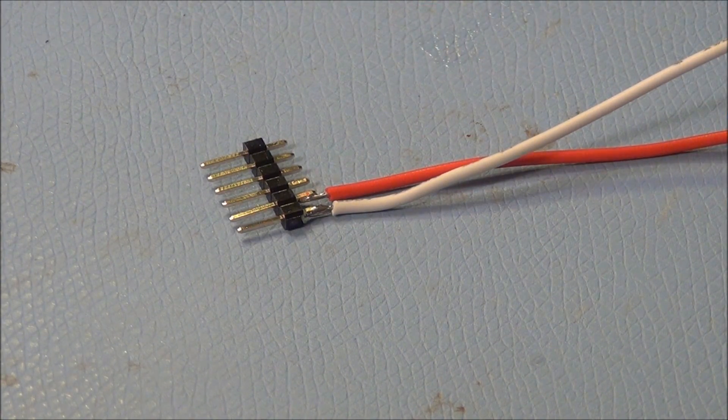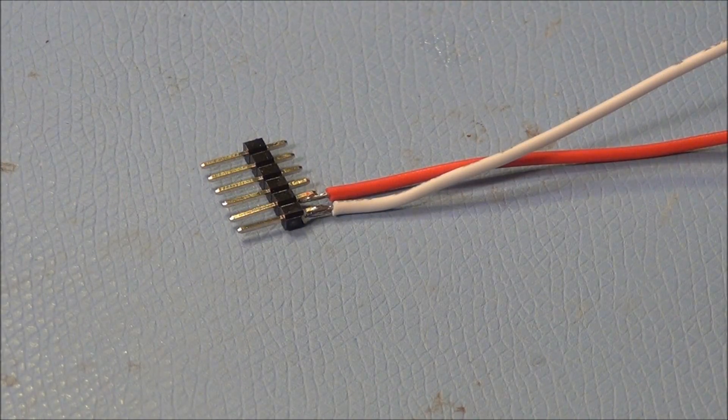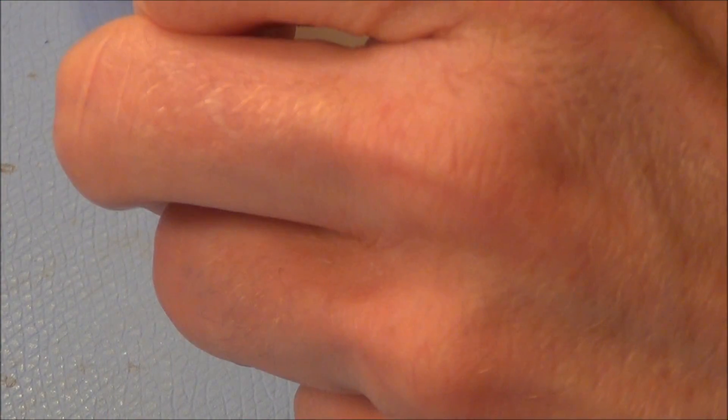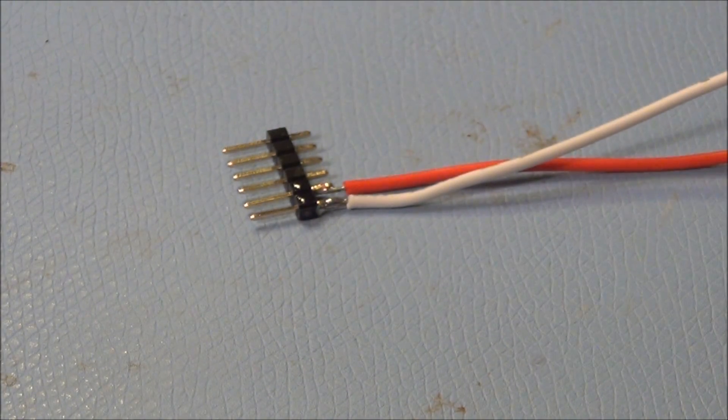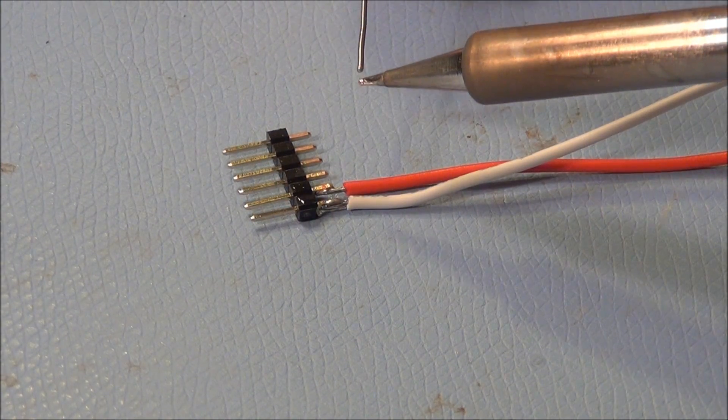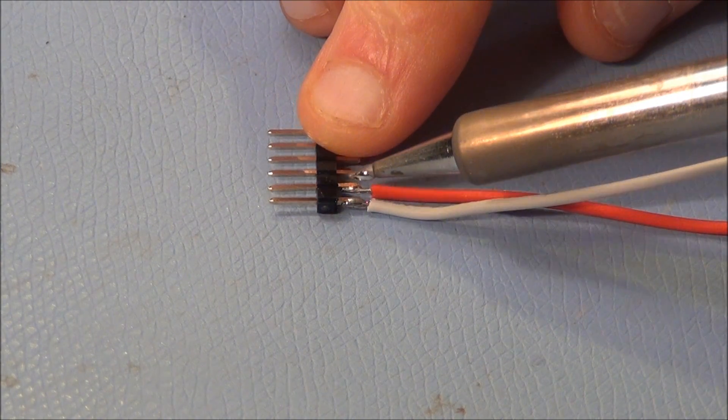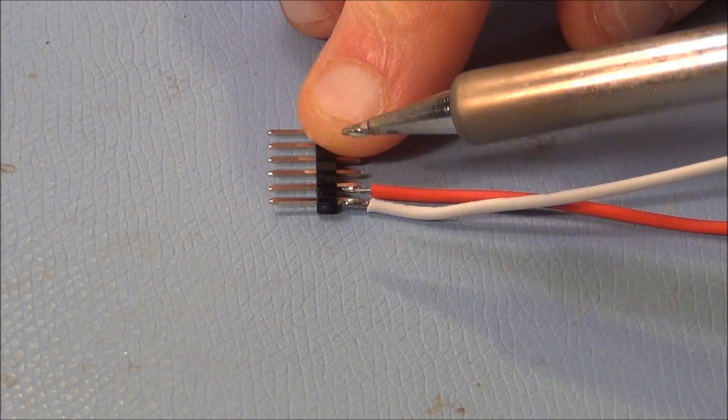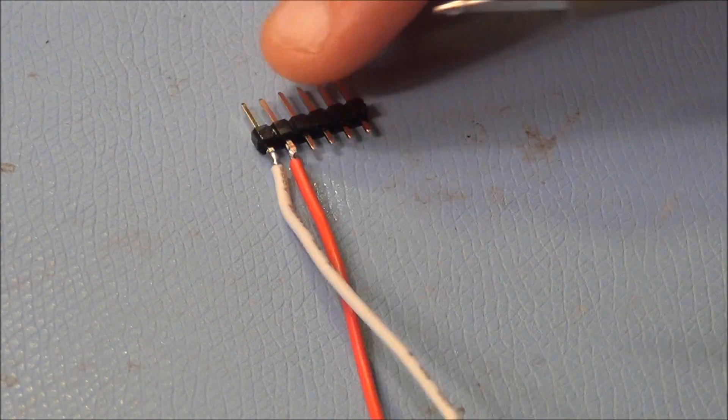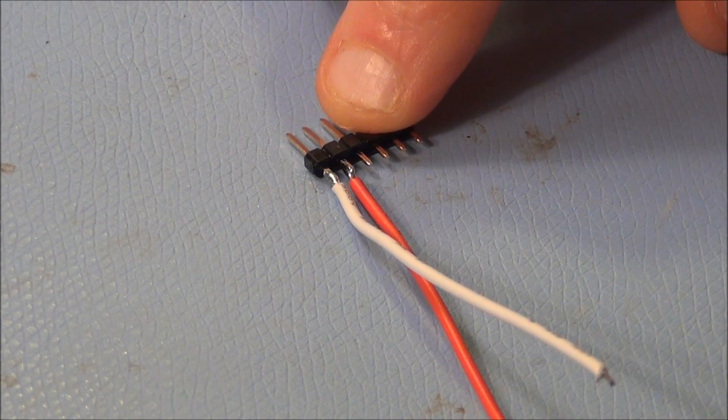So again, I've got very little solder on the bottom of that. So let's reflux. Put some more solder on our tip. And get some solder on the other side. And there we go.